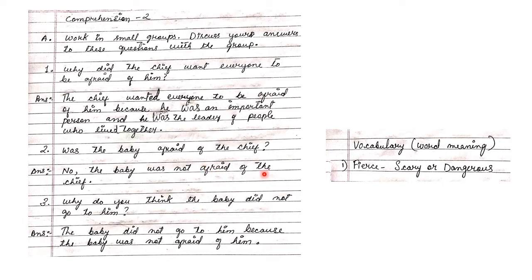Question three: why do you think the baby did not go to him? The baby did not go to him because the baby was not afraid of him. Now we will see vocabulary — that is, word meanings. The first word is 'fierce,' which means scary or dangerous.